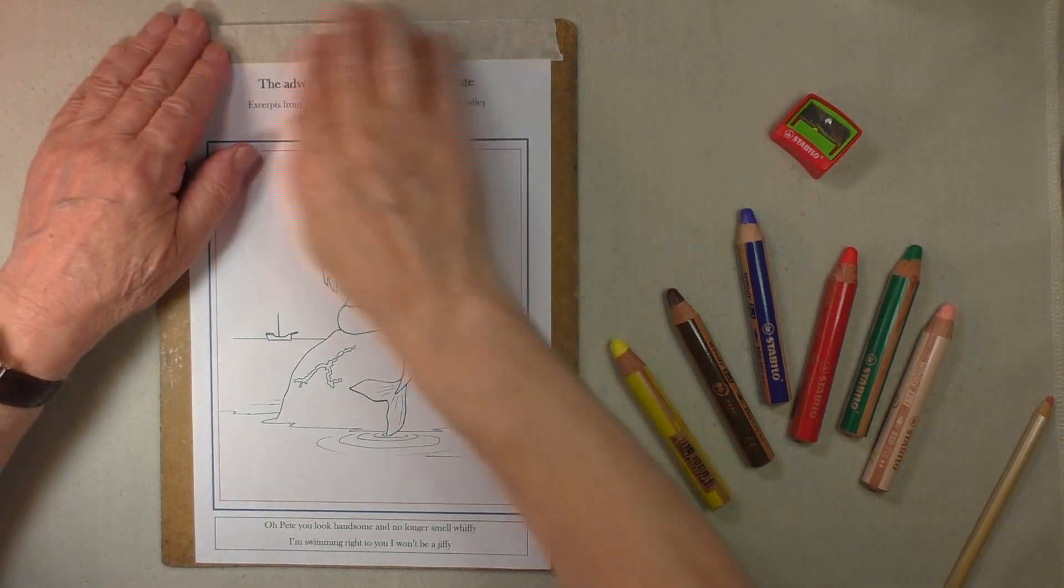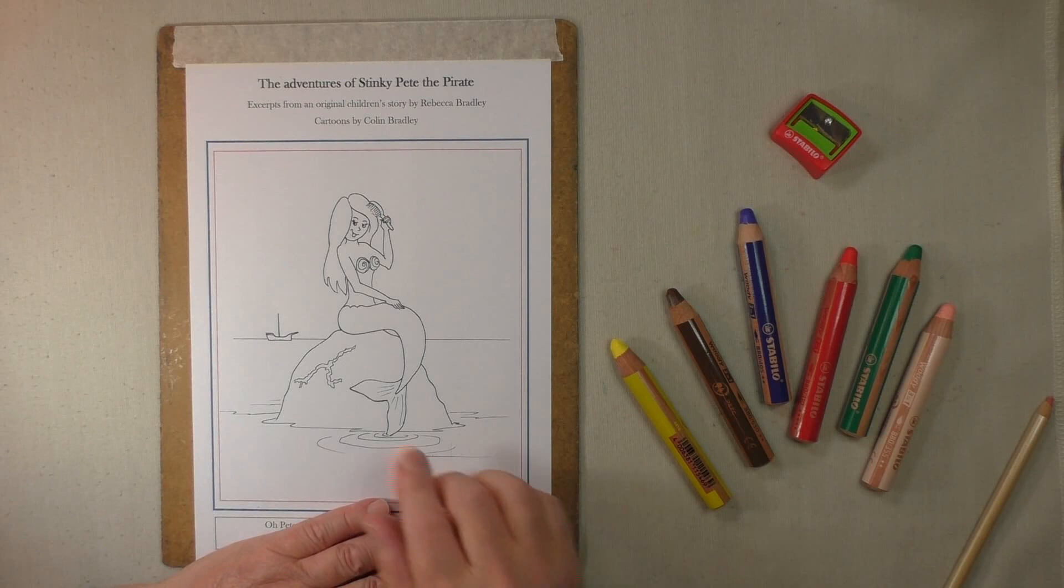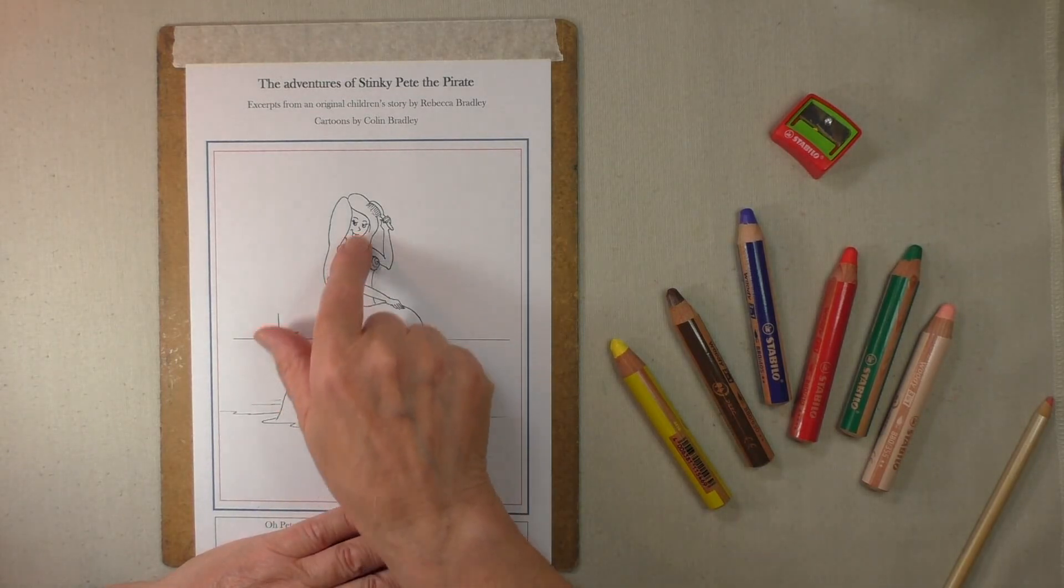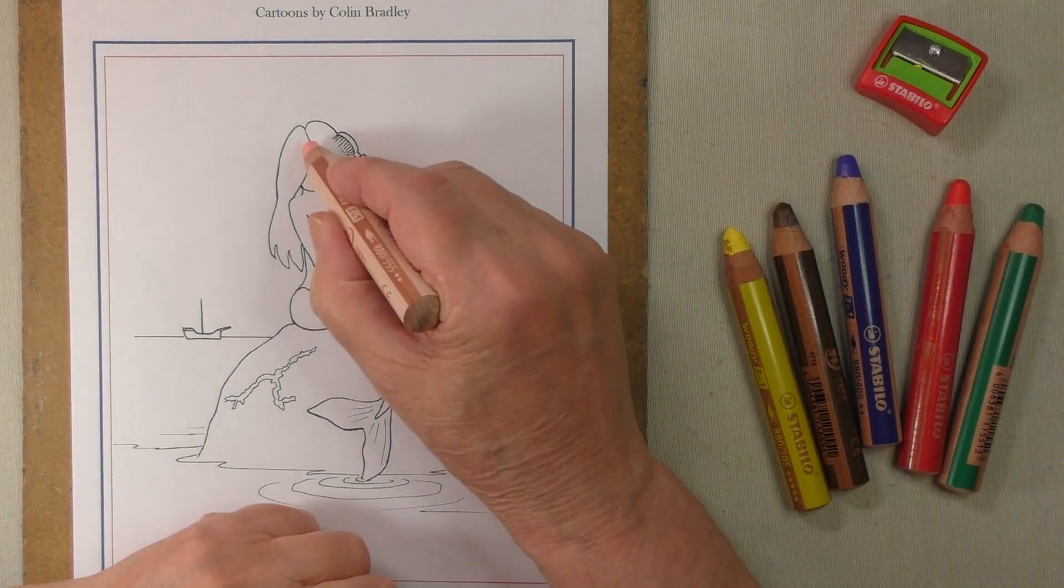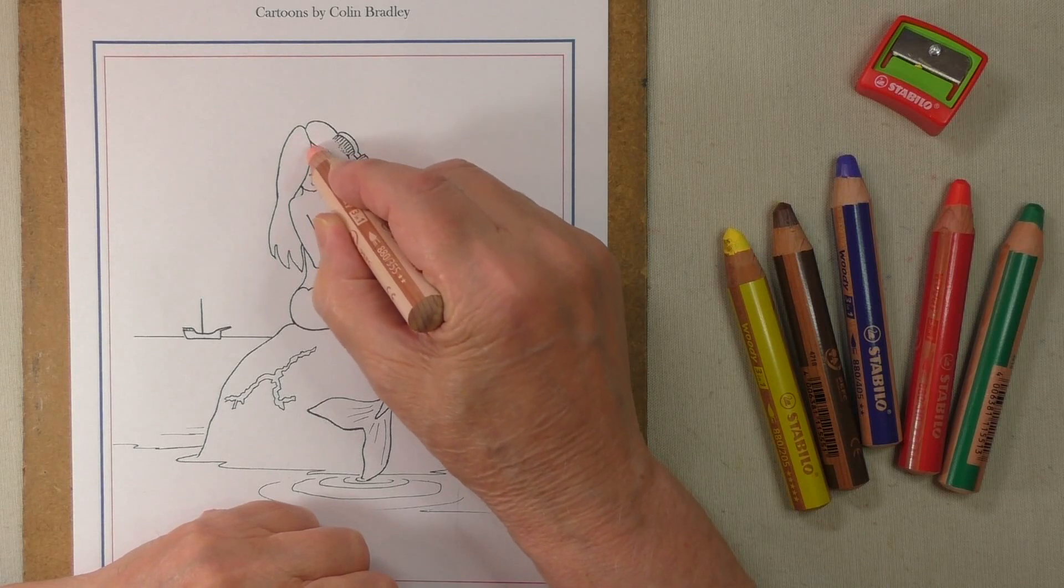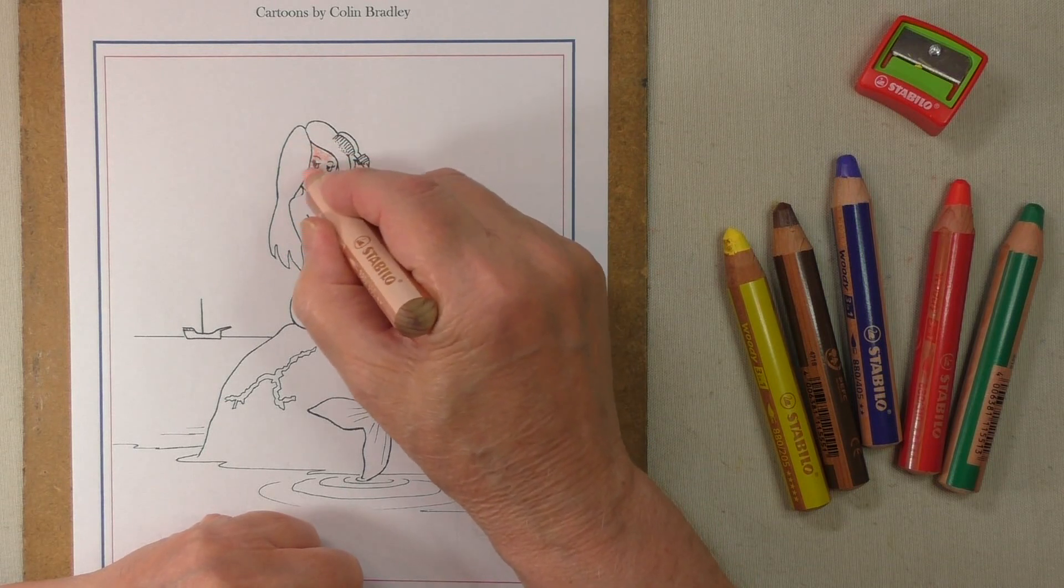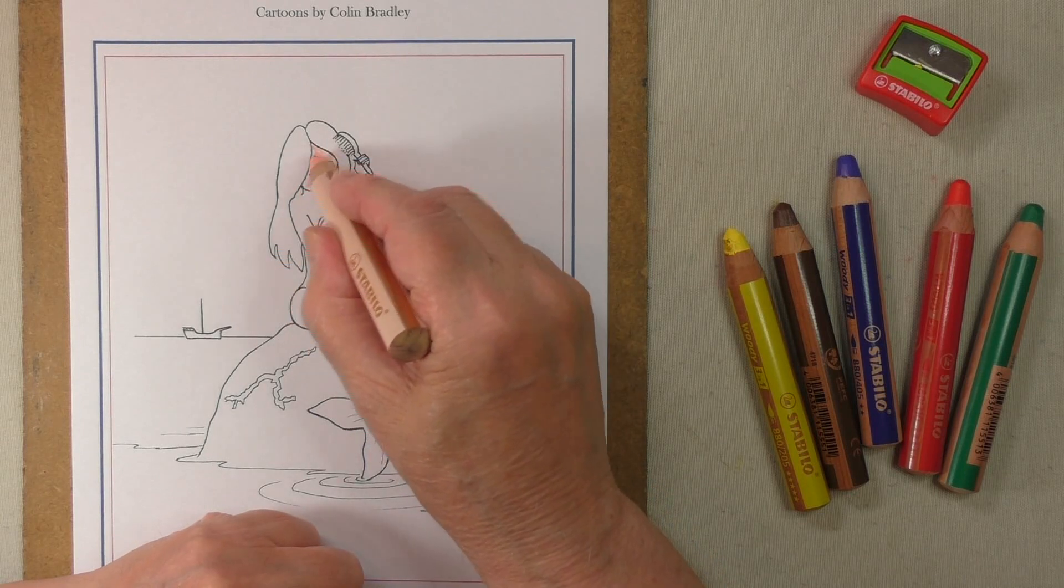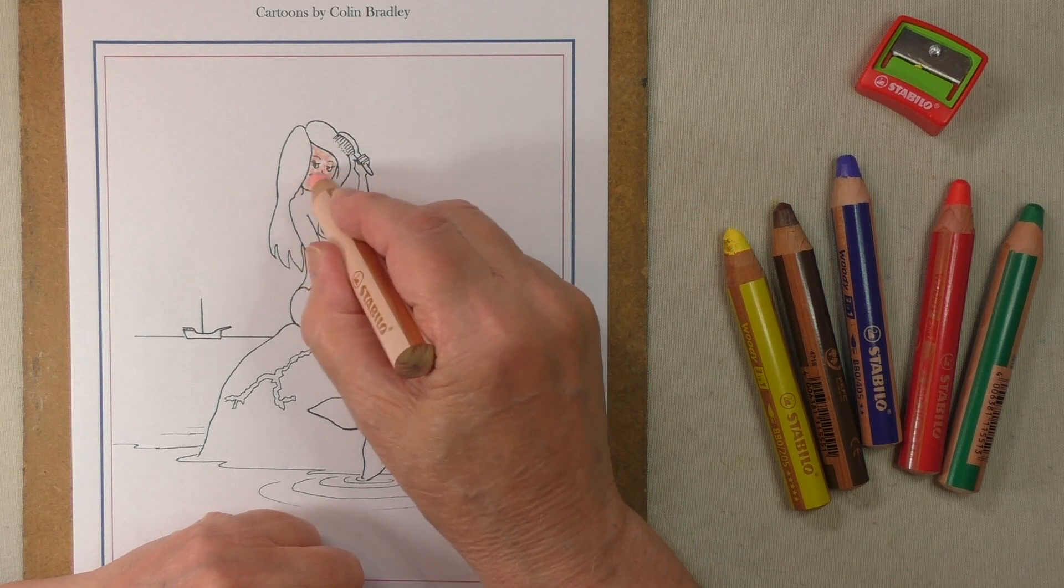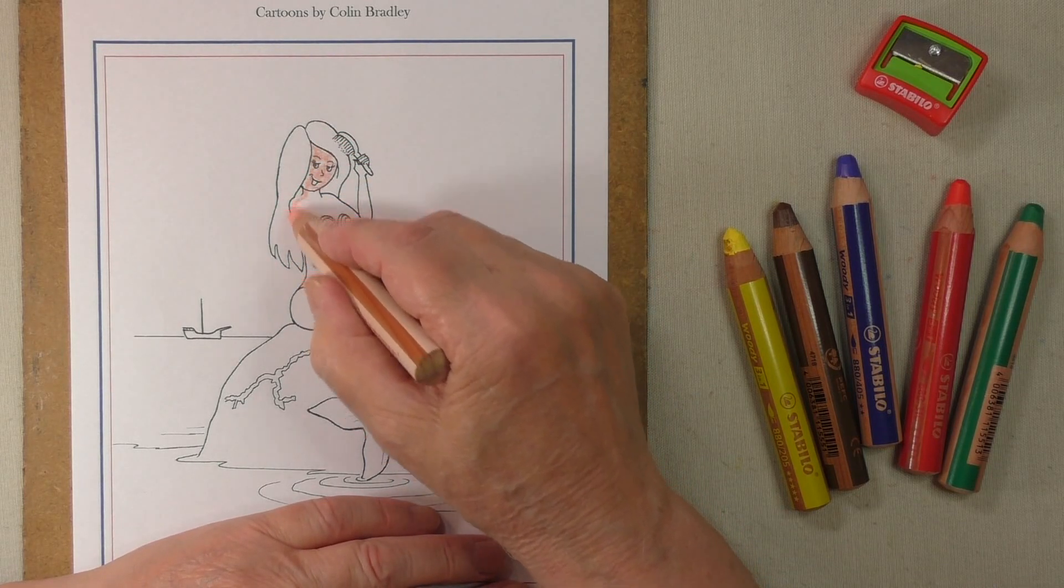Well as before I've taped my picture onto the board and I'm ready to go. We're going to start, as usual, by putting in the skin tones. Use the pink. That's a little bit more delicate this one than the Stinky Pete picture. Going to make her look very pretty. So be careful, make sure you get a nice pinky look to her, and then follow her through on her skin.